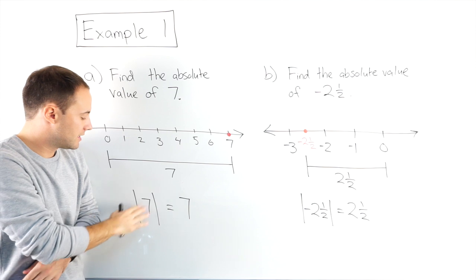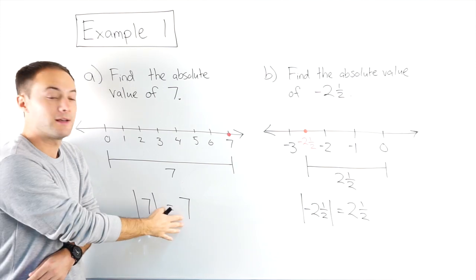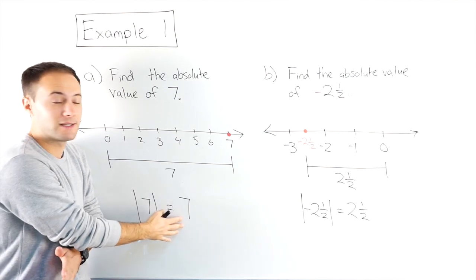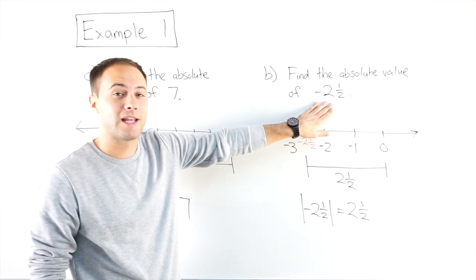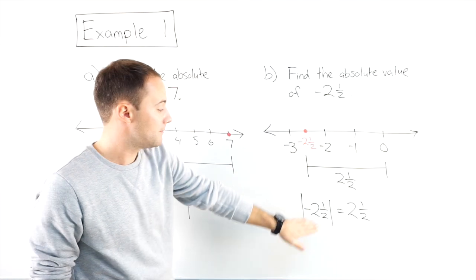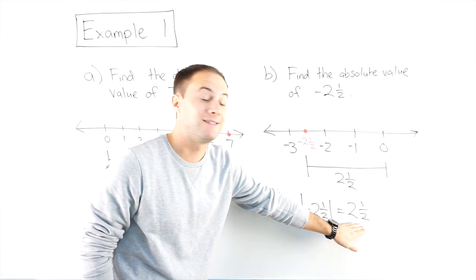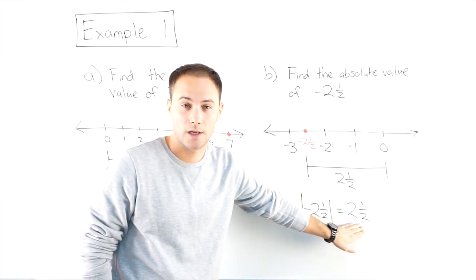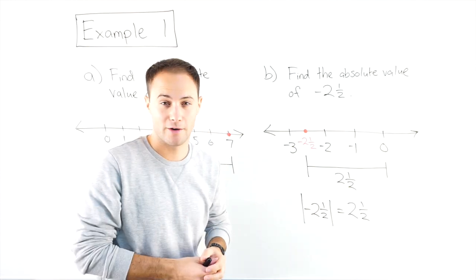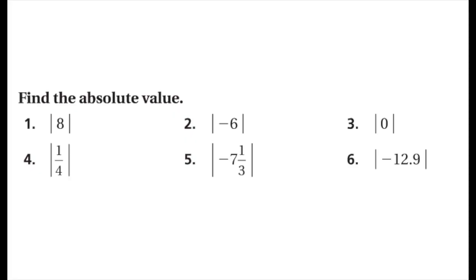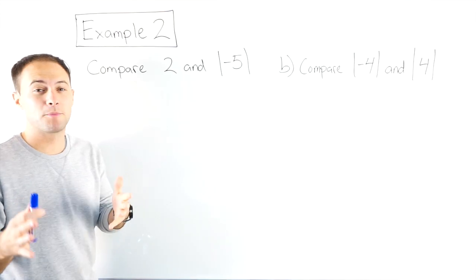Hopefully you notice something here: the absolute value of a positive number stayed positive — it's a positive distance. But when we took the absolute value of a negative number, it became positive, because distances need to be positive. Here's something to try on your own. Example two.